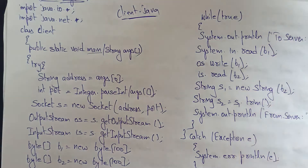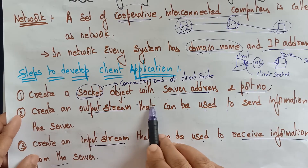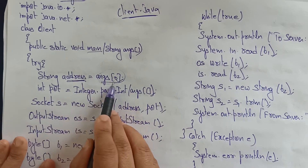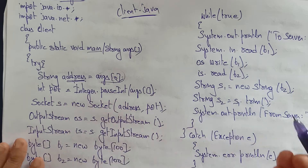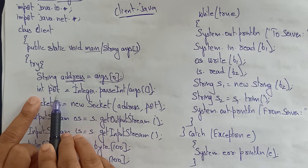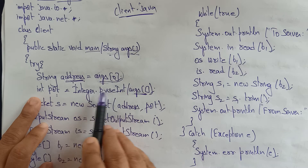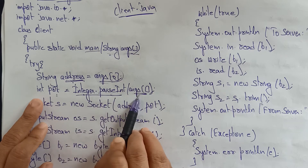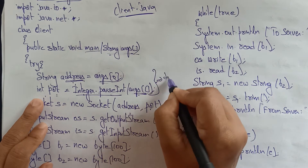Import java.io.* and java.net.*. In the Client class, inside the main method's try block: first, create a socket object with server address and port number. Declare the address as a String from args[0], and the port as int, converting args[1] from String using Integer.parseInt(). So args[0] is the address and args[1] is the port.